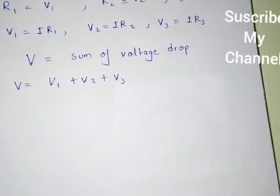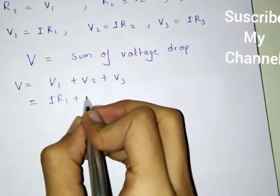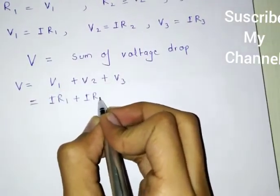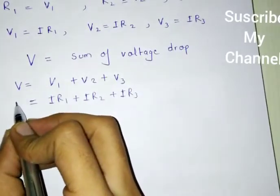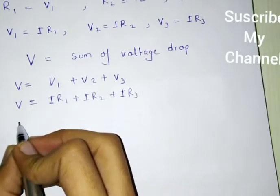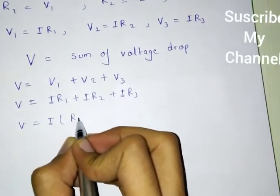Now we have to put the actual values of V1, so V1 equals to I R1, V2 equals to I R2, and V3 equals to I R3. So here I is common, so it becomes I times R1 plus R2 plus R3.